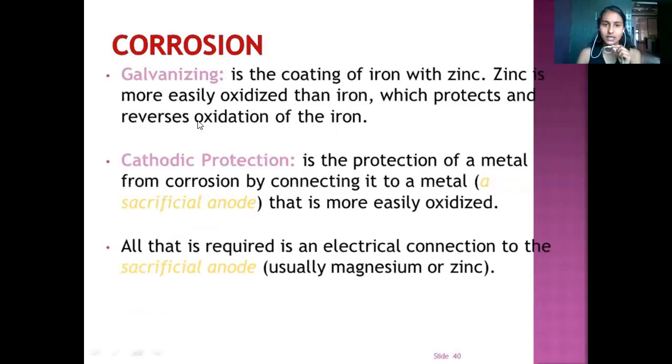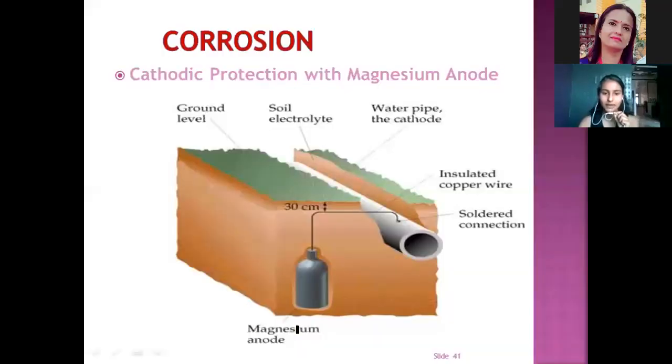Galvanized zinc. It is the coating of iron with zinc and zinc is more easily oxidized than iron so it protects the iron from oxidation. Cathodic protection is the protection of metal by connecting it to another metal. Basically, in this protection, one anode has to sacrifice itself to protect the cathode. In this diagram, we can see that magnesium anode is kept here, which is connected to the insulated copper wire. When it is exposed to the moisture, magnesium anode protects the cathode from corrosion.